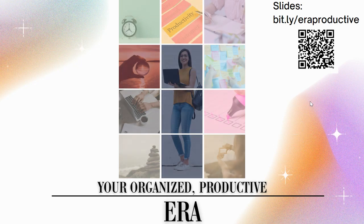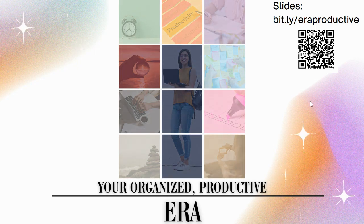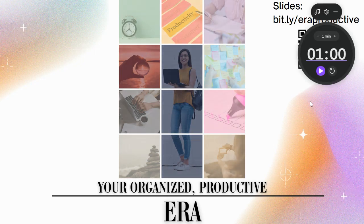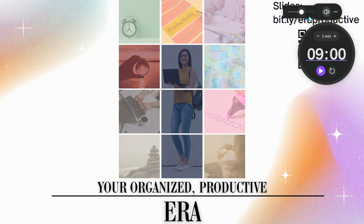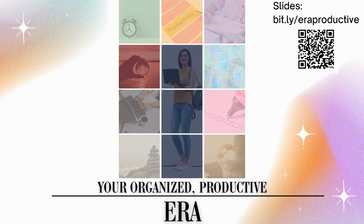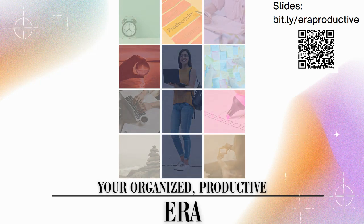If you enter a number one through nine, it opens a timer on your screen. So if you press two, you get a two-minute timer; press nine for nine minutes. There are also volume and music controls you can add to the timer. If you don't want the timer up there anymore, just press the number again and it gets rid of it — one for one minute, and so on.